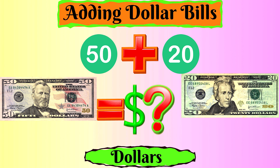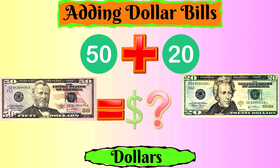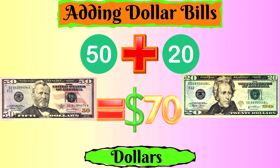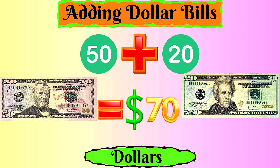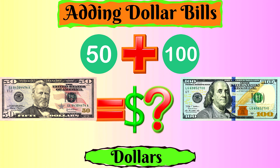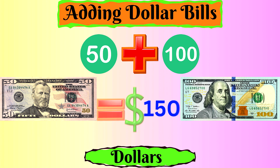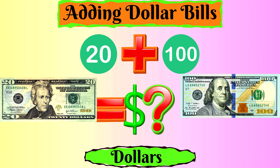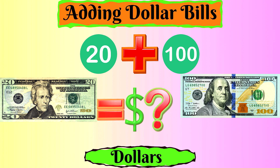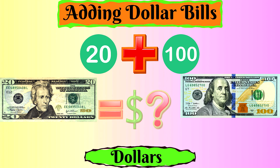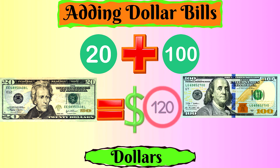Fifty dollars plus one hundred dollars equals one hundred fifty dollars. Twenty dollars plus one hundred dollars equals one hundred twenty dollars.